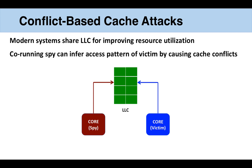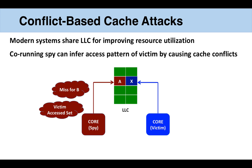For example, the spy can insert lines A and B in the cache. The victim accesses X, which kicks out B. The spy can use timing tests to infer that B gets a cache miss, which means the victim must have accessed the given set.